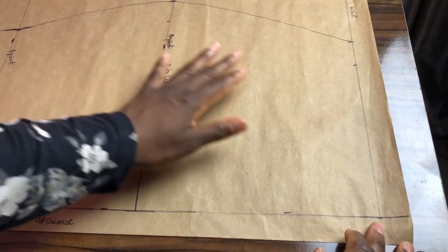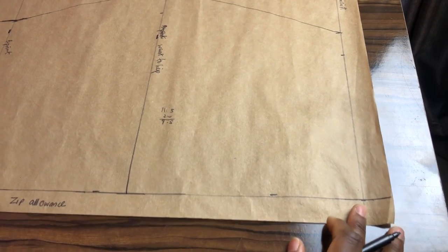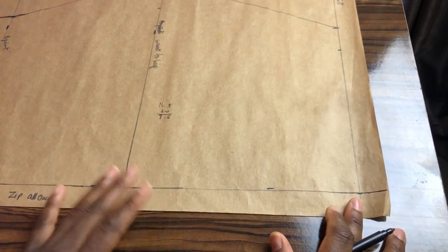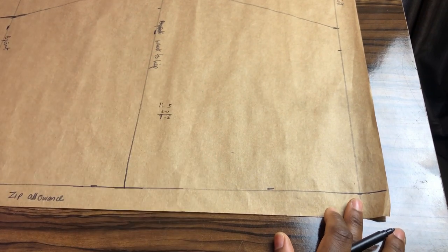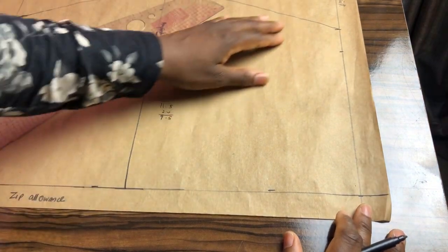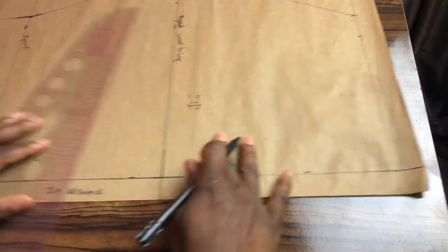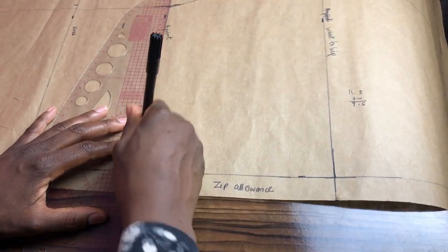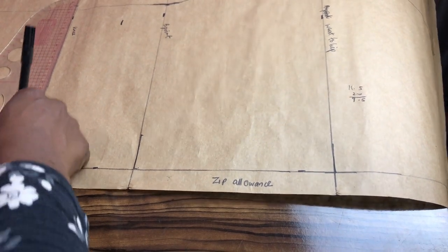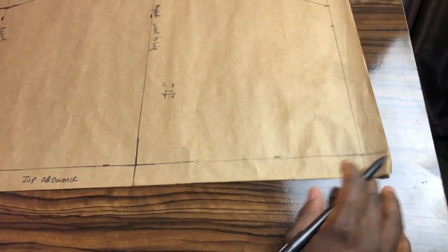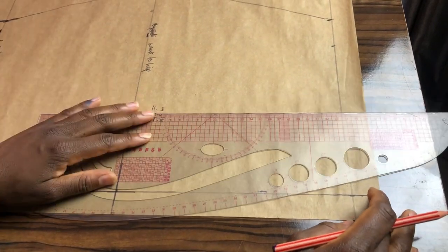So now your skirt pattern is ready, but let me show you how to contour the pattern for a defined bum illusion. We will completely eliminate the zip allowance around here to contour this skirt pattern. So extend all horizontal measurements to the zip allowance. Note that you are contouring only the back pattern.